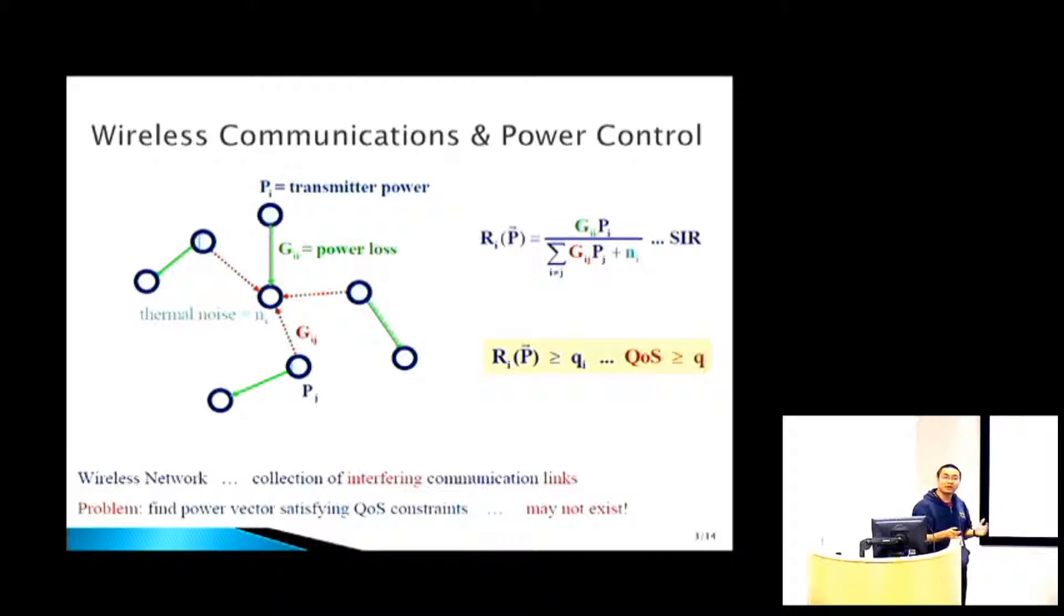A common way for measuring the system performance is something called signal-to-interference ratio, which is given by this functional form. Here the Gij represents the power loss or power gain between transmitter I and receiver J. The larger the Gij means the more influence transmitter I exerts on receiver J. With this setup, the classical power control problem can be phrased as finding a vector P such that the quality of service constraints are satisfied.